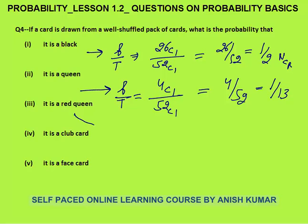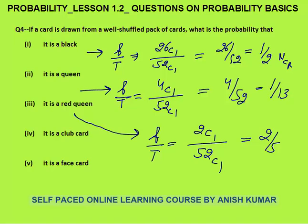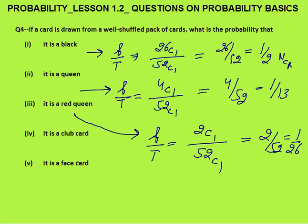Third: the card is a red queen. Favorable upon total. Total cases are 52C1. Favorable case is a red queen — we have two red queens: one for heart and one for diamond. Out of two, select any one: 2C1. So the answer is 2 by 52, which is 1 by 26.